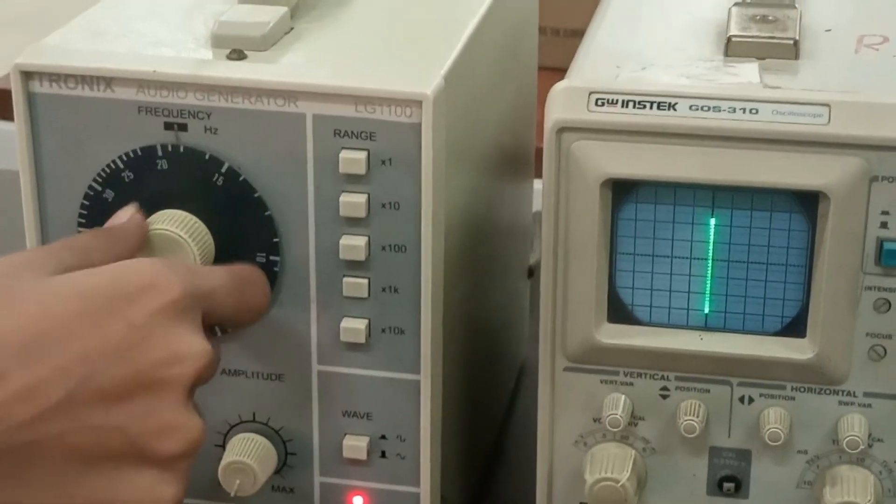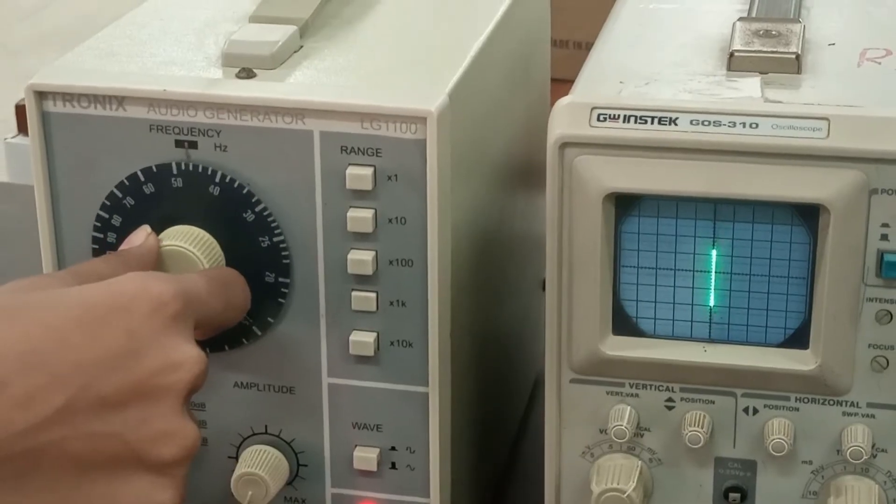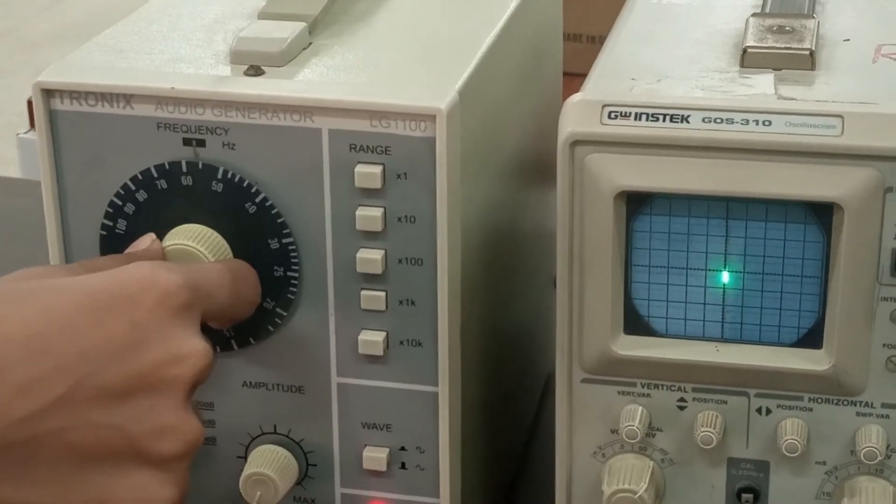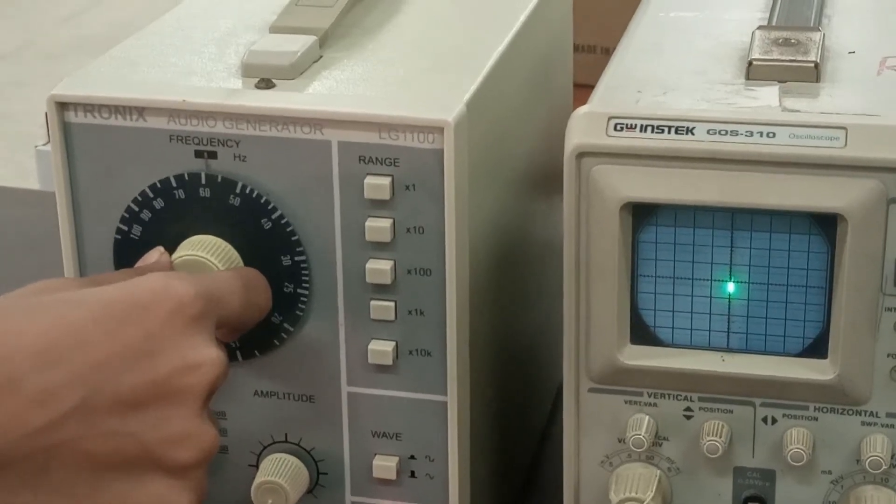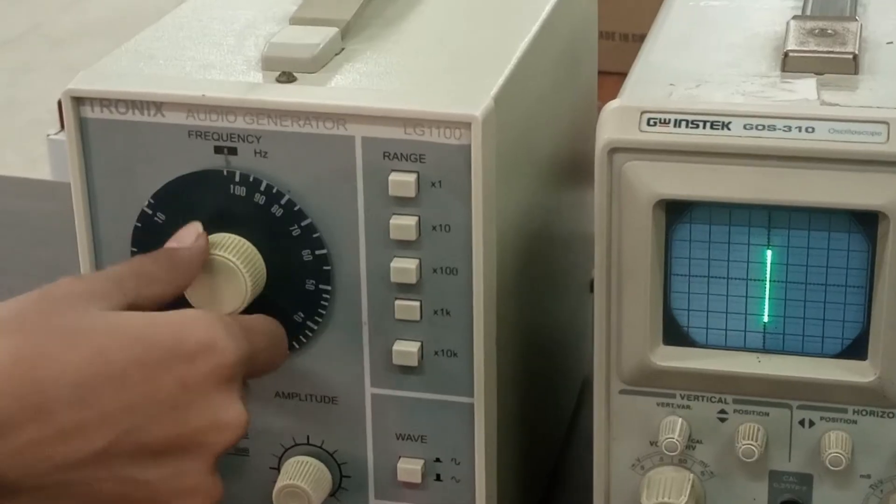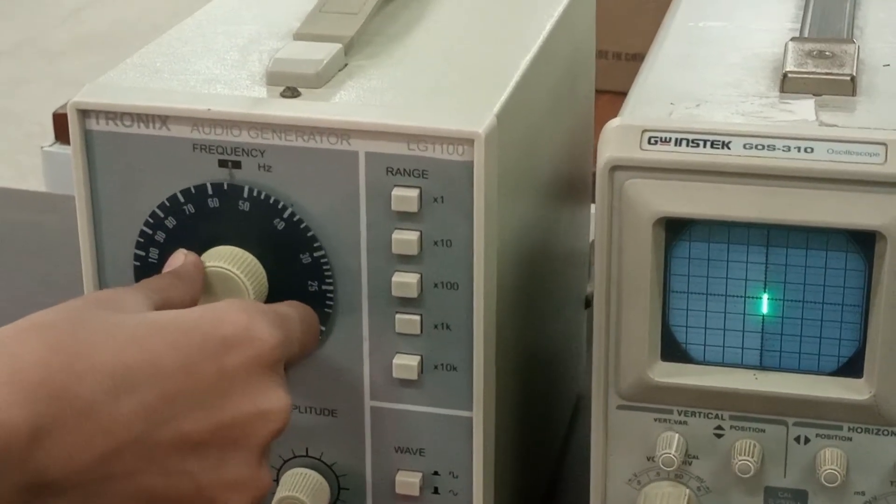the amplitude starts decreasing, and then at a particular point it starts increasing again. The point at which we get the minimum amplitude is the resonant frequency point.